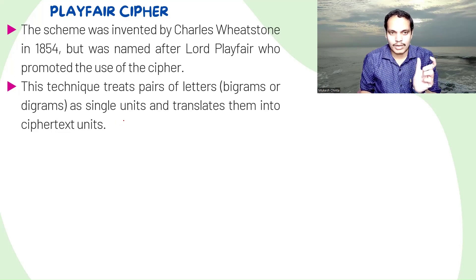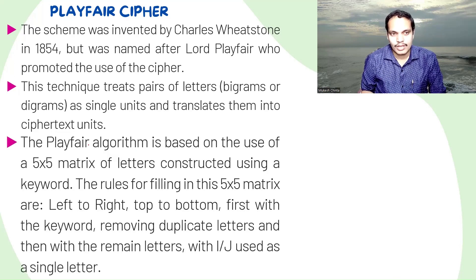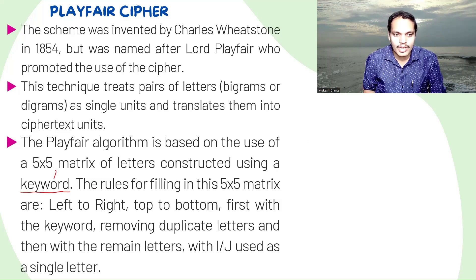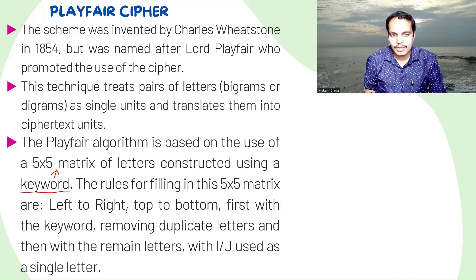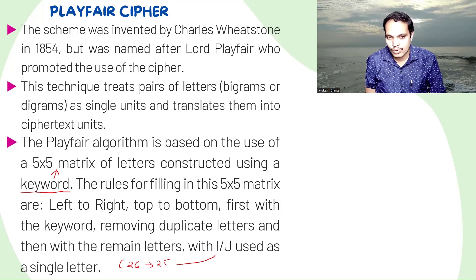Two characters — a pair of plaintext characters — are considered one unit, and we generate ciphertext in pairs as well. To do this, we make use of a 5x5 matrix. The Playfair algorithm is based on a 5x5 matrix of letters constructed using a keyword. The rules for filling in this matrix are: start writing left to right, top to bottom, first with the keyword removing duplicate letters, then with the remaining letters, with I and J treated as a single letter, since 26 letters won't fit in 25 cells.